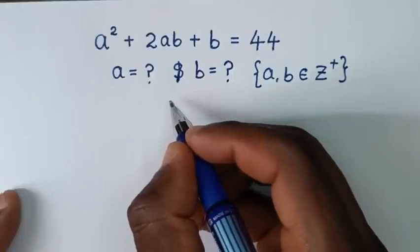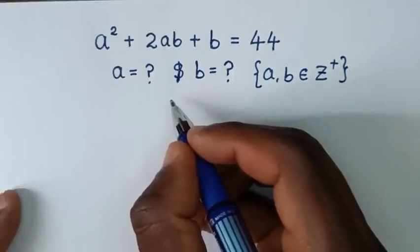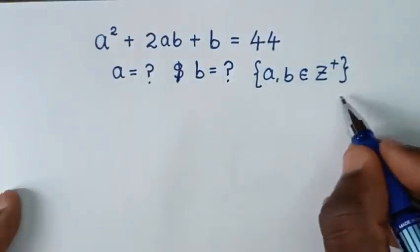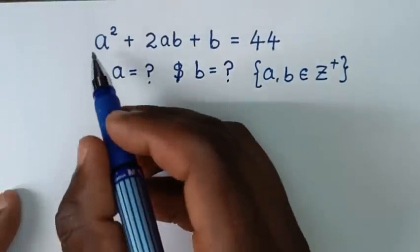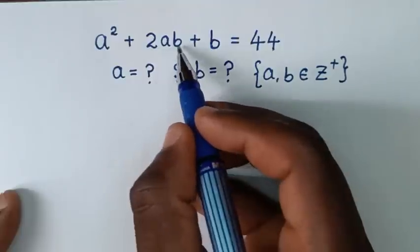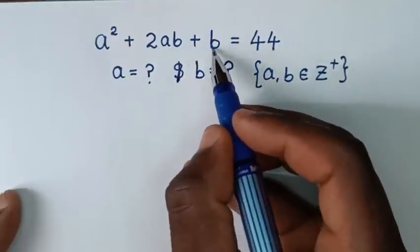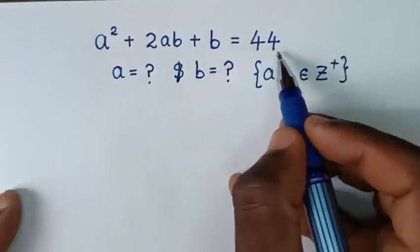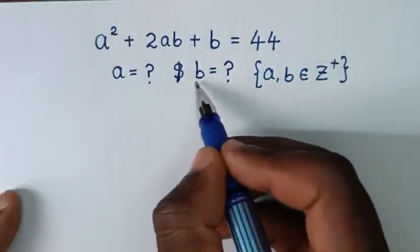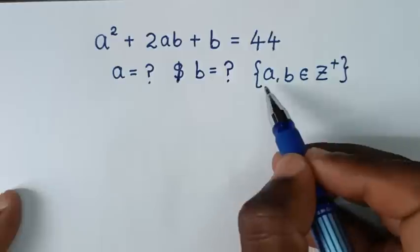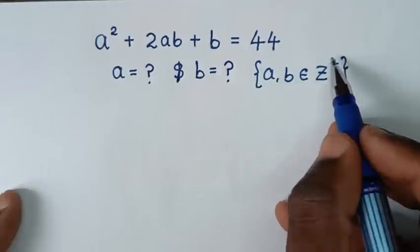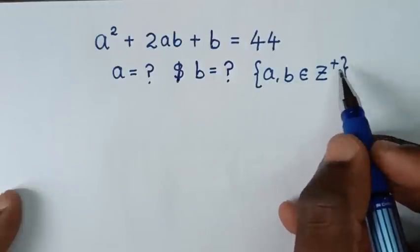Hello, you are welcome to solve this math problem: a squared plus 2ab plus b is equal to 44. We need to find the values of a and b such that a and b are elements of the positive integers.